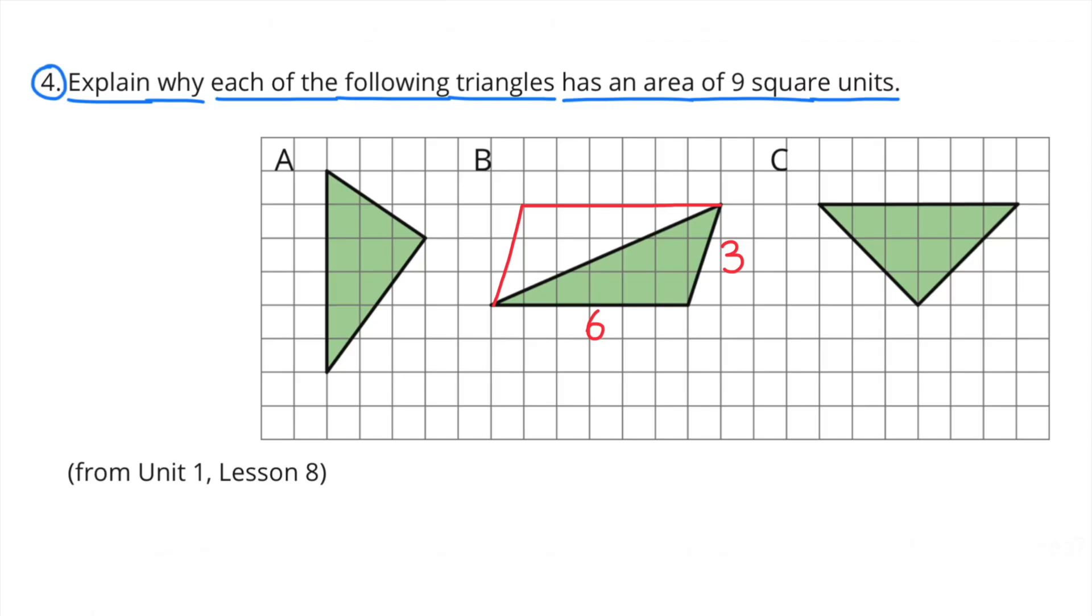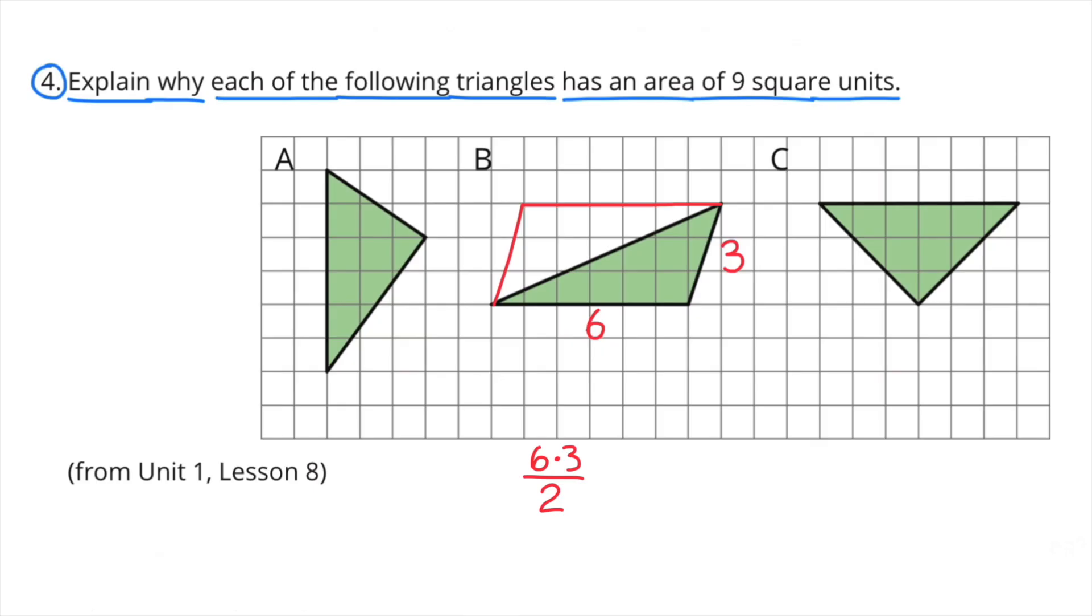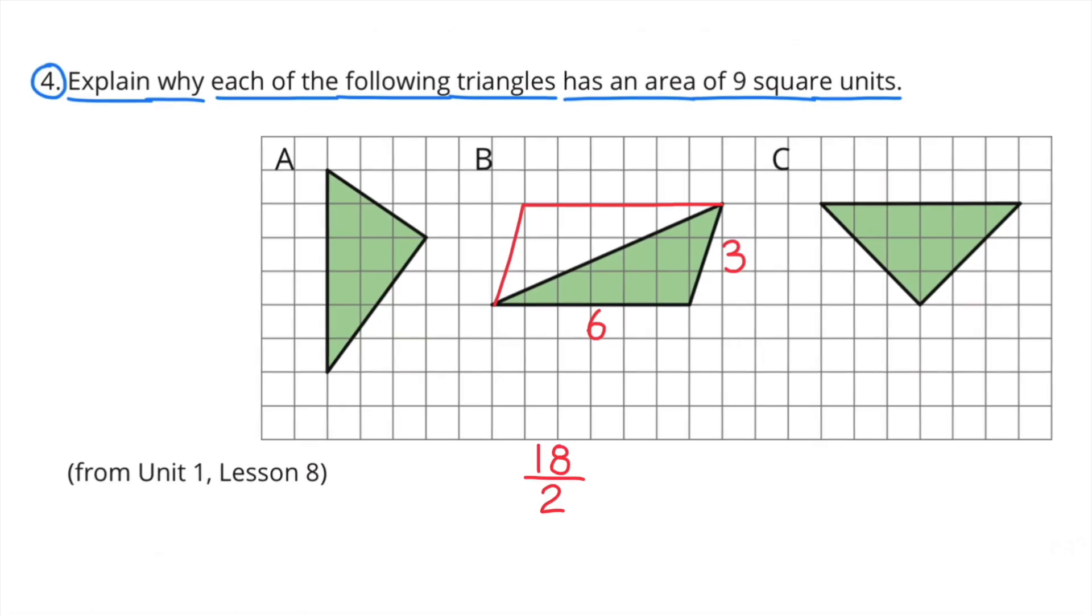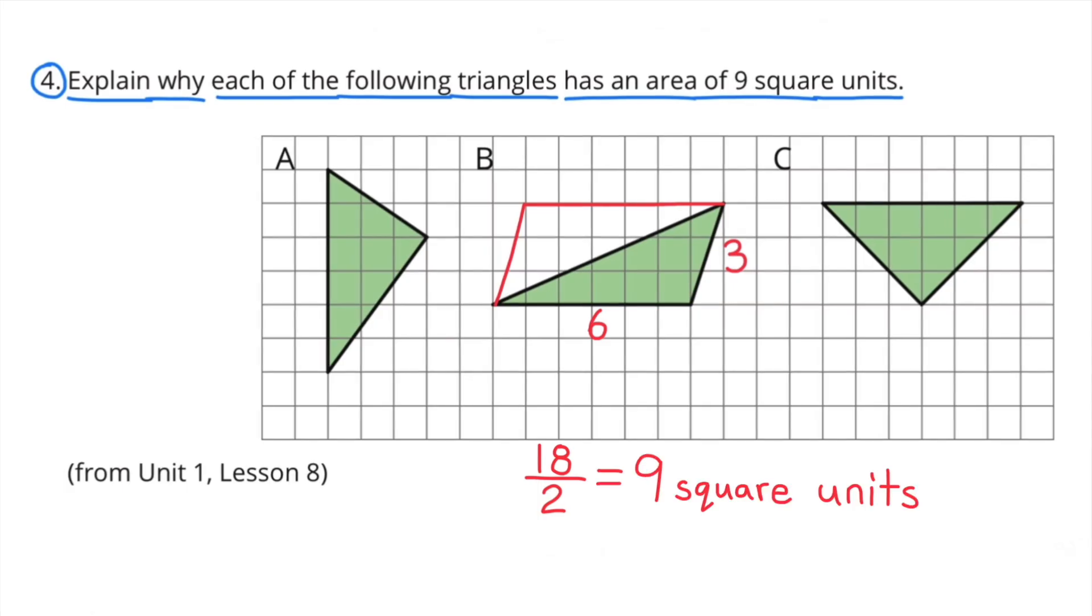The area of triangle B is going to be half of its base times its height, or half of 6 times 3. 6 times 3 is 18. 18 divided by 2 is 9. The area of triangle B is 9 square units.